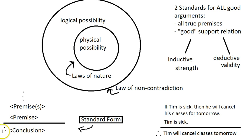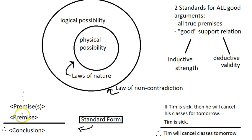The claims providing support we put above the line — the premises. It might just be one claim, one premise supporting one conclusion, or it could have many premises. There's no upper limit. The nice thing about standard form is it makes very explicit what claims are doing which jobs in the argument relationship. The support relation between premises and conclusion is asymmetrical — it's a one-way street — so it's very important to know which thing is on which side.